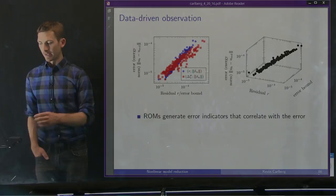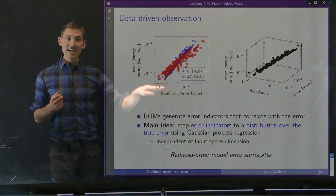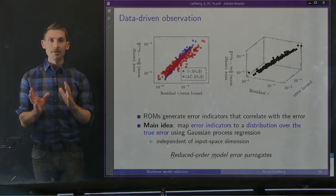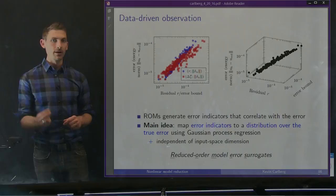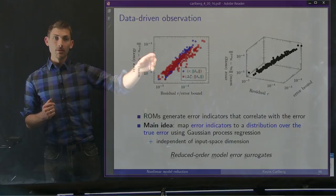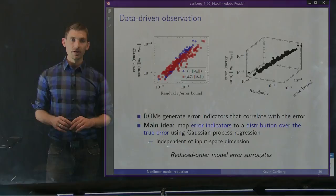And that is basically the kernel of our idea: we would like to generate a data-driven mapping that maps these error indicators to a distribution over the true error, and we're going to use Gaussian process regression for that purpose. The advantage here is that this is totally independent of the input space dimension — even in a 100-dimensional parameter space, the ROM generates only a small number of error indicators required to build this mapping. We call this approach the Reduced Order Model Error Surrogates, or ROMS method.